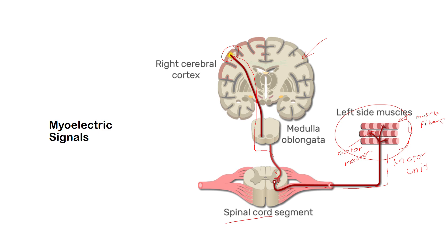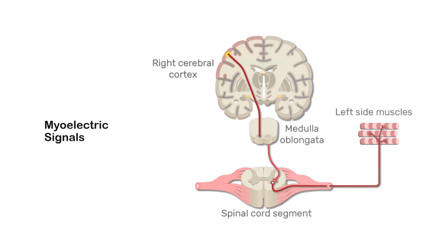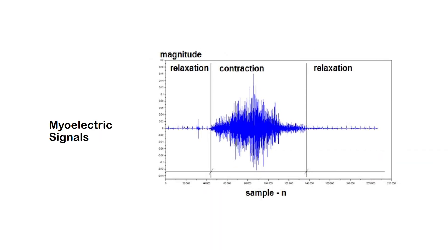When the motor unit is activated, it produces a motor unit action potential. This activation is repeated continuously for as long as the muscle is required to generate force. This continued activation produces motor unit action potential trains. As a result, we can see now here the EMG signals or the EMG signal activity.